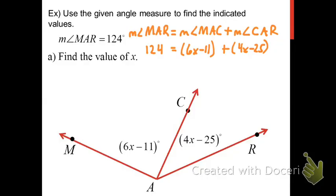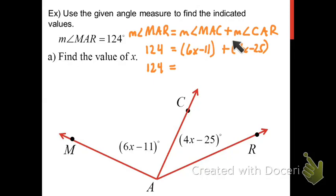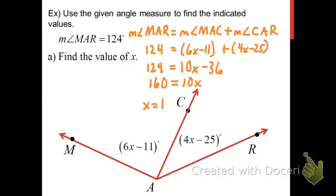The rest is algebra. On the right side, the parentheses aren't doing anything since there's only an addition sign between them, so we combine like terms: 6X plus 4X is 10X, and negative 11 plus negative 25 is negative 36. So we have 124 equals 10X minus 36. Adding 36 to both sides gives 160 equals 10X, and X equals 16.